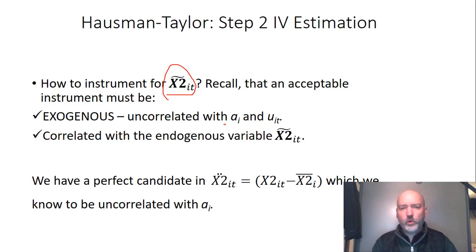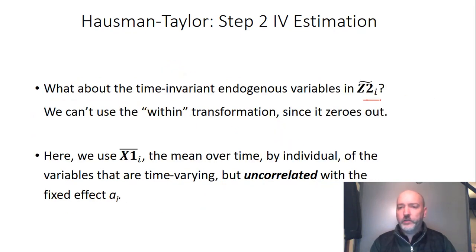So here we're instrumenting for these variables in this X2IT category after we've done the random effects transformation. So we need to find a variable that's uncorrelated with the AI and the UIT. So it's exogenous, but ideally highly correlated with the X2 variable. And the insight here of the Hausman-Taylor model is we have that variable right in front of us. That the demeaned version, what we're calling that X2IT umlaut. Following that fixed effects demeaning transformation. Well, that demeaning transformation eliminates correlation with the AI. Creates a new version of that variable that's, of course, going to be highly correlated with that random effects transformation. All right, so we're going to IV using that demeaned transformation.